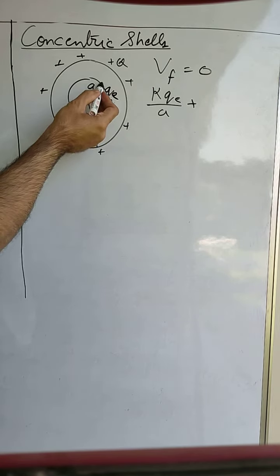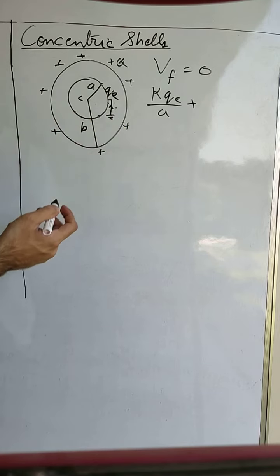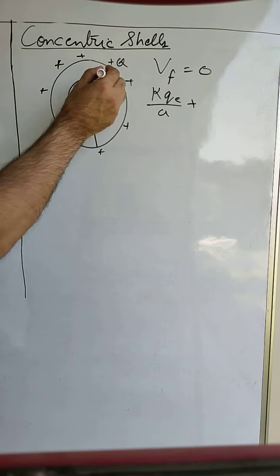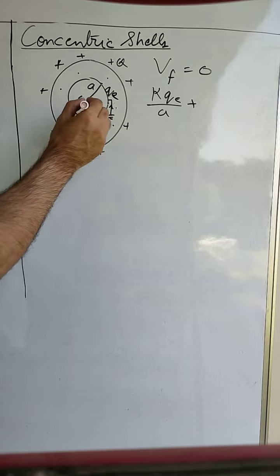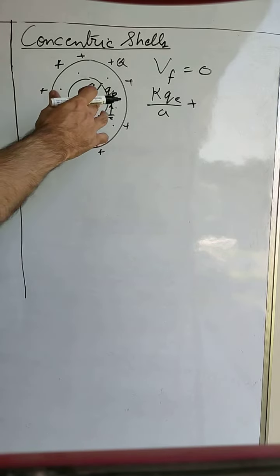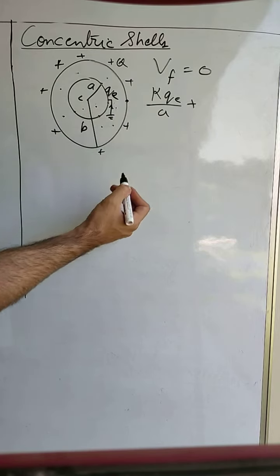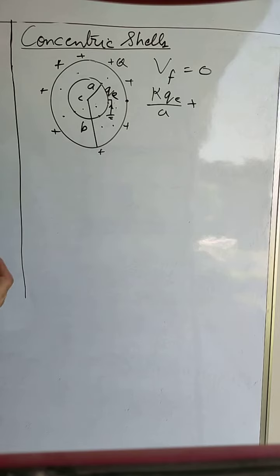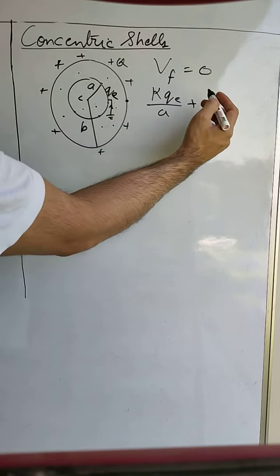This point or any point on the inner shell is an inside point. Now we have already studied that when charge is distributed on an inner metal surface, then every point inside that surface behaves like an equipotential point. That means whatever is the potential on this point, at every point inside this shell the potential will be same. So how much is the potential at this point?